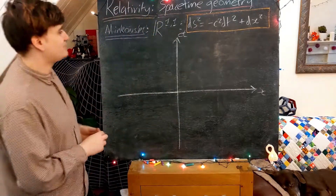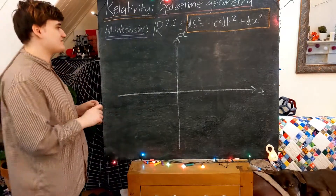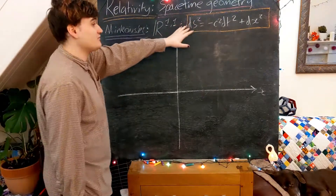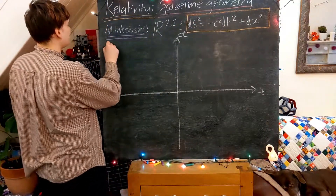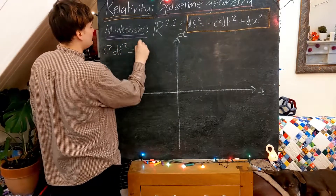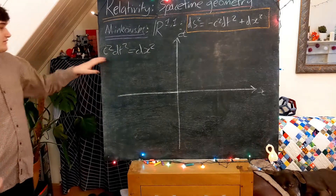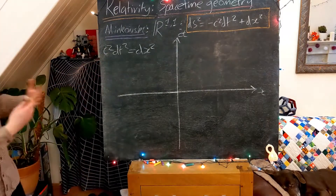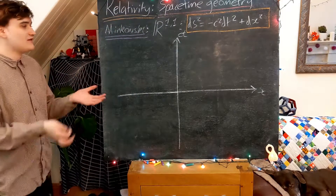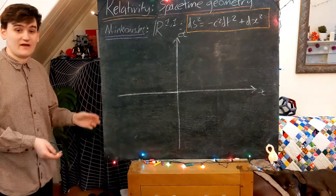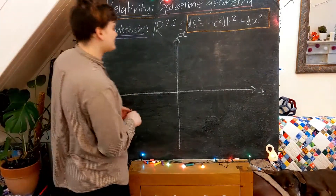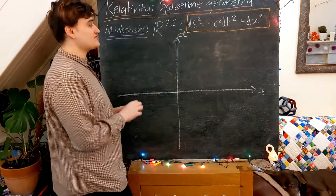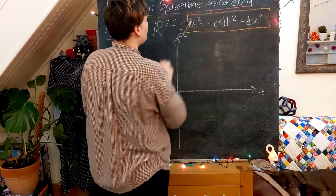Let's explore this more. Let's consider the points at which ds squared equals zero. Rearranging the equation, this expression is zero when dx squared equals c squared dt squared. Now let's start exploring this geometry in a similar way to how we did in Euclidean space — rather than looking at infinitesimal intervals, let's consider their finite variant. I've simply integrated to remove ds and replace the infinitesimal line element with the finite line element.